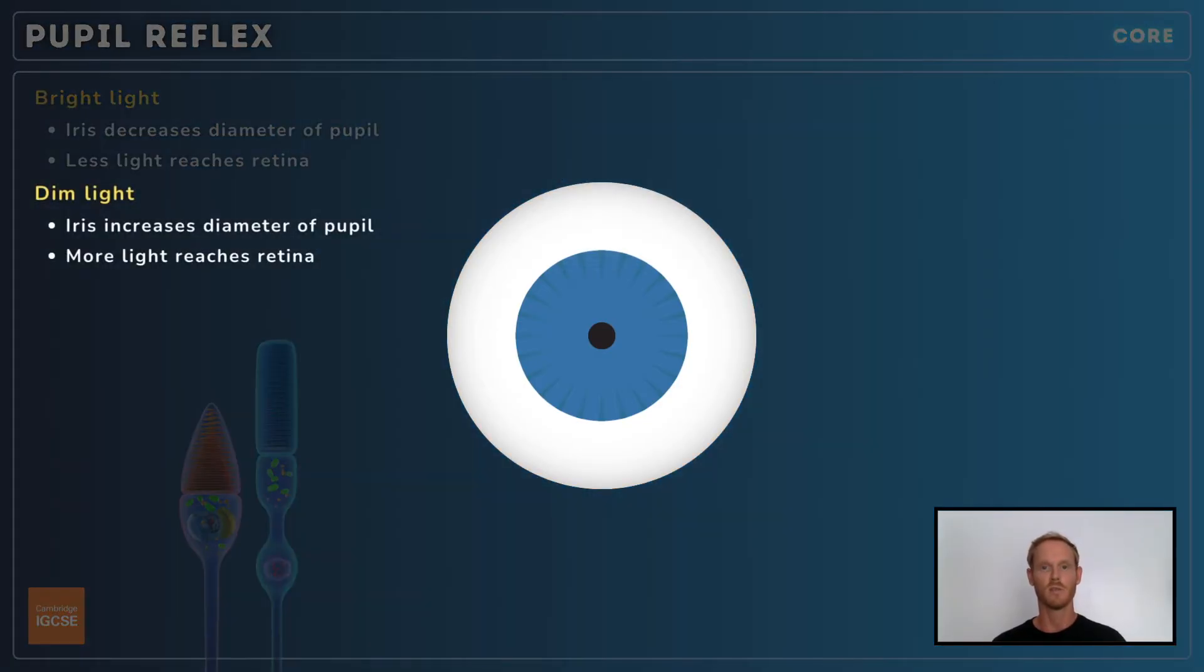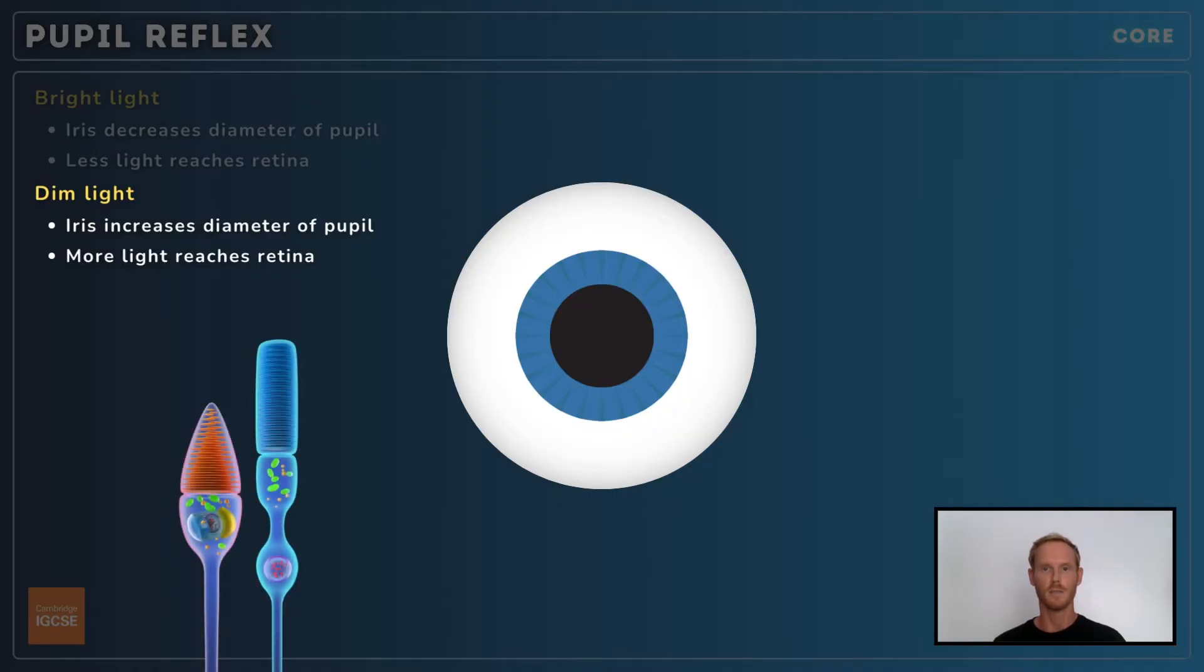In dim light, the muscles of the iris dilate or increase the diameter of the pupil. This allows as much light as possible to reach the retina, improving the clarity of the image. This is known as the pupil reflex, as you cannot control it consciously.